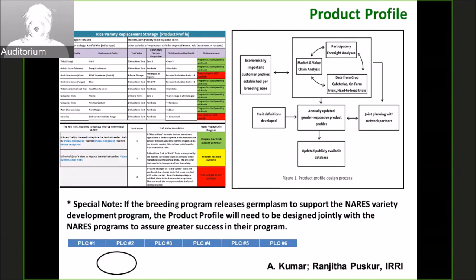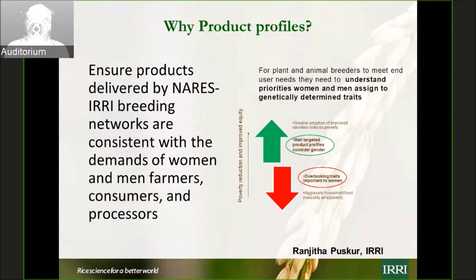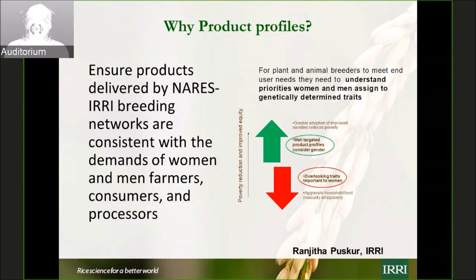At IRRI, what a breeder will breed is not decided by just the breeder. A gender specialist helps determine the product profile for different regions in participation with the breeder. Why product profiles? So that we really give importance to everything and ensure that the product is liked in the market. In developing the product profile, it is not just about what exists now — we have to think about what will exist 10 years from now. That is very difficult for one person to capture alone, but we can capture it as a group.